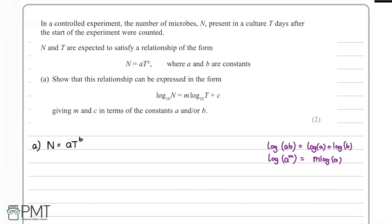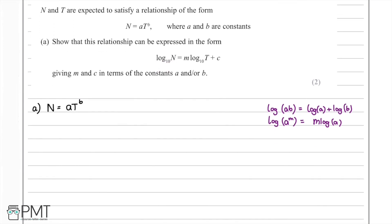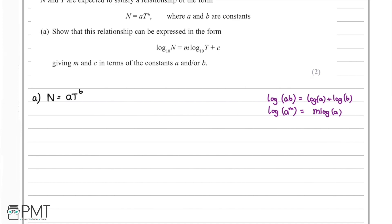In part a of this question, we're asked to show that this relationship can be expressed in the form log₁₀n equals m·log₁₀t plus c, where we give m and c in terms of the constants a and b. Our starting point is the equation n equals a·t to the power of b. We want to get the n term into the form log₁₀n, so as a first step we take log₁₀ of both sides, giving log₁₀n equals log₁₀ of a·t to the power of b.